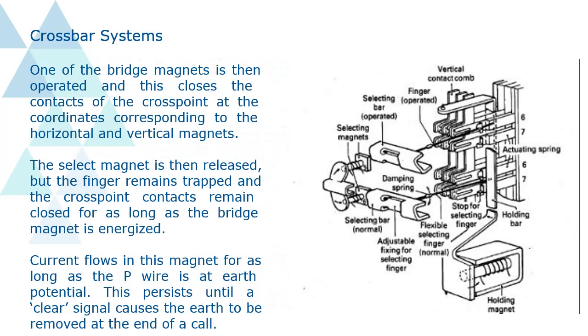One of the bridge magnets is then operated and this closes the contacts of the crosspoint at the coordinates corresponding to the horizontal and vertical magnets. The select magnet is then released, but the finger remains trapped and the crosspoint contacts remain closed for as long as the bridge magnet is energized. Current flows in this magnet for as long as the P wire is at earth potential. This persists until a clear signal causes the earth to be removed at the end of a call.